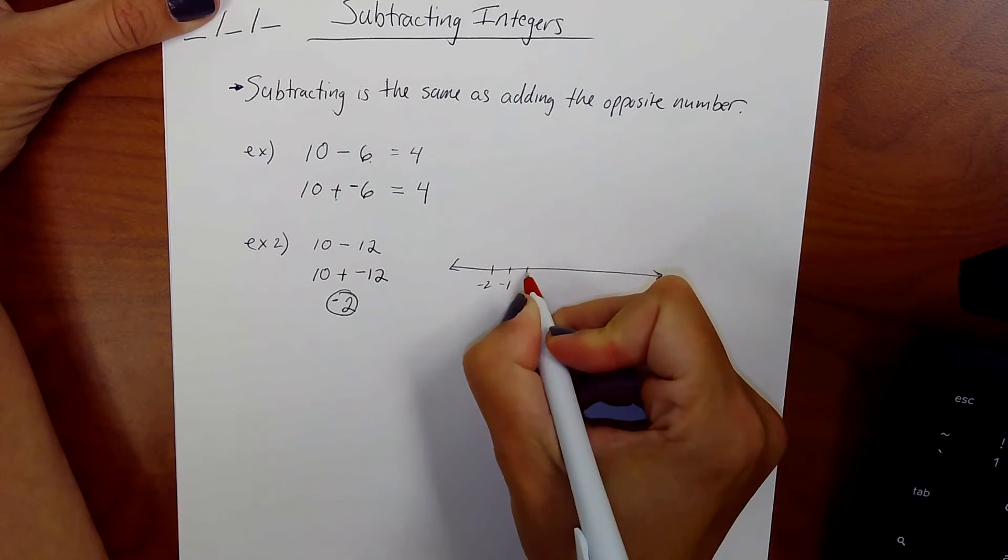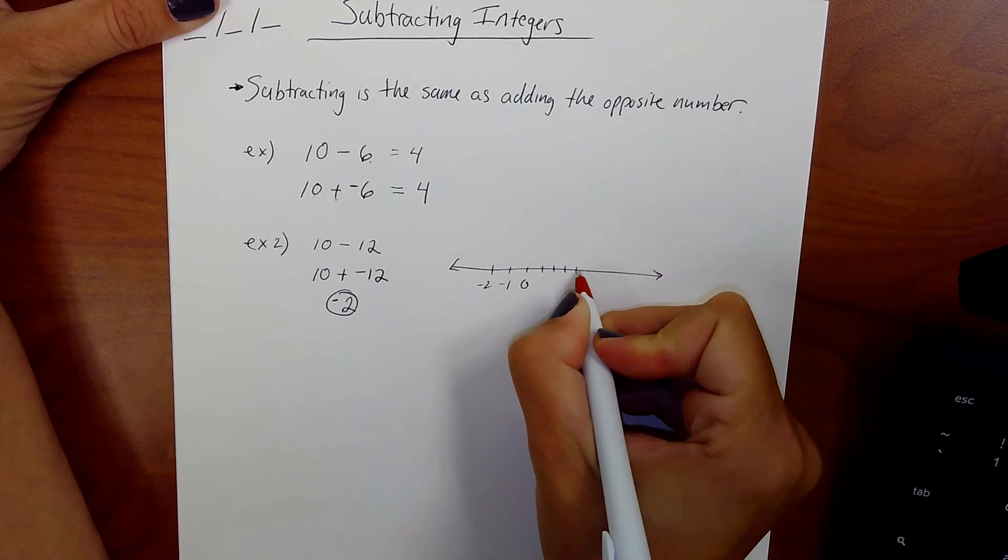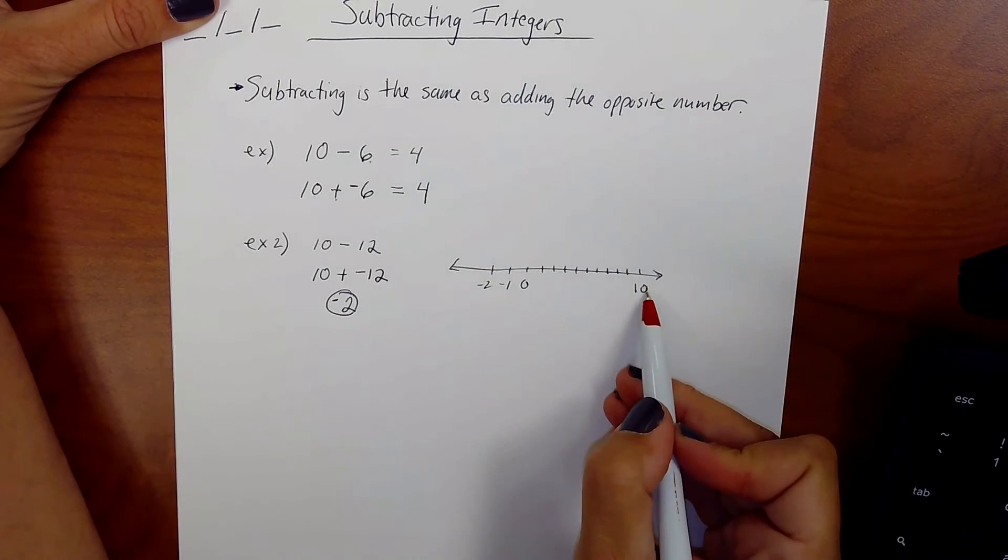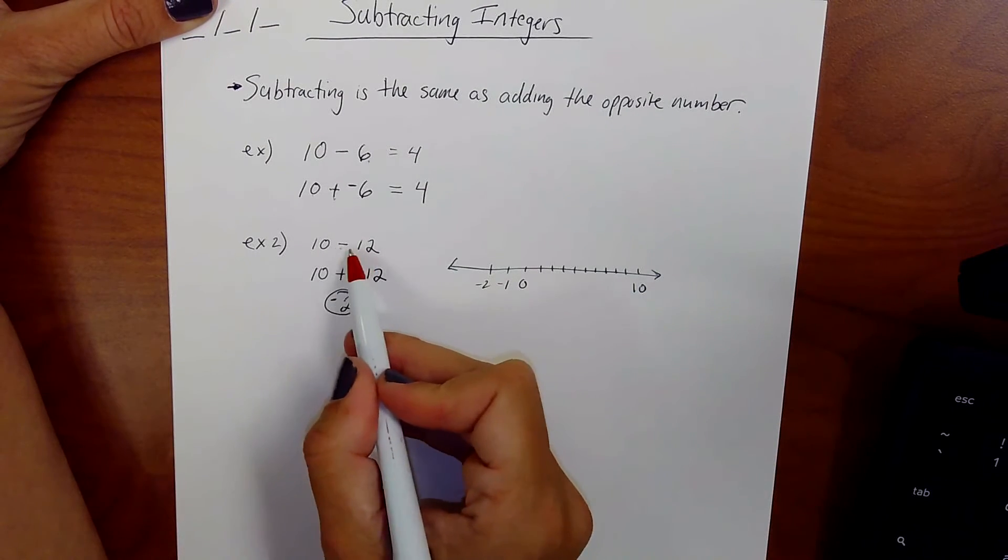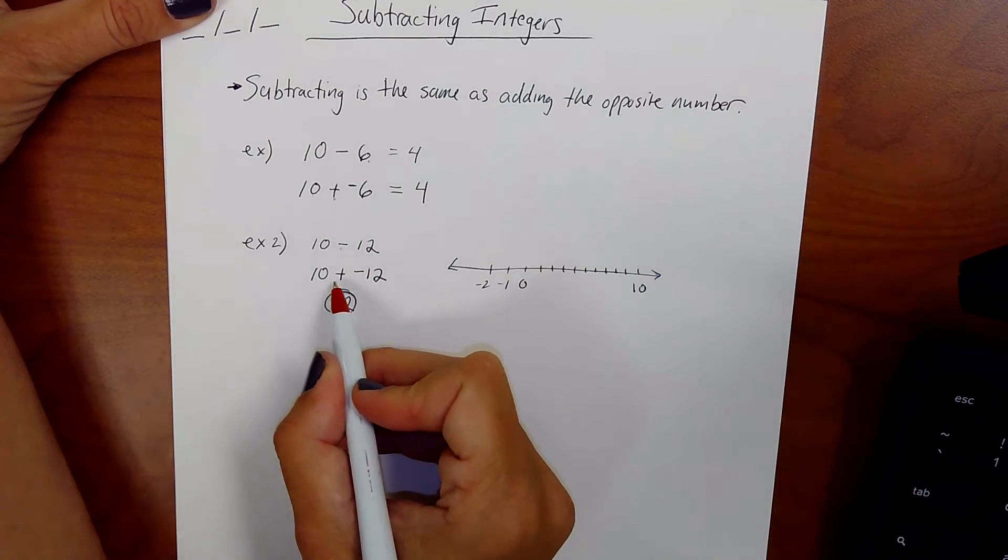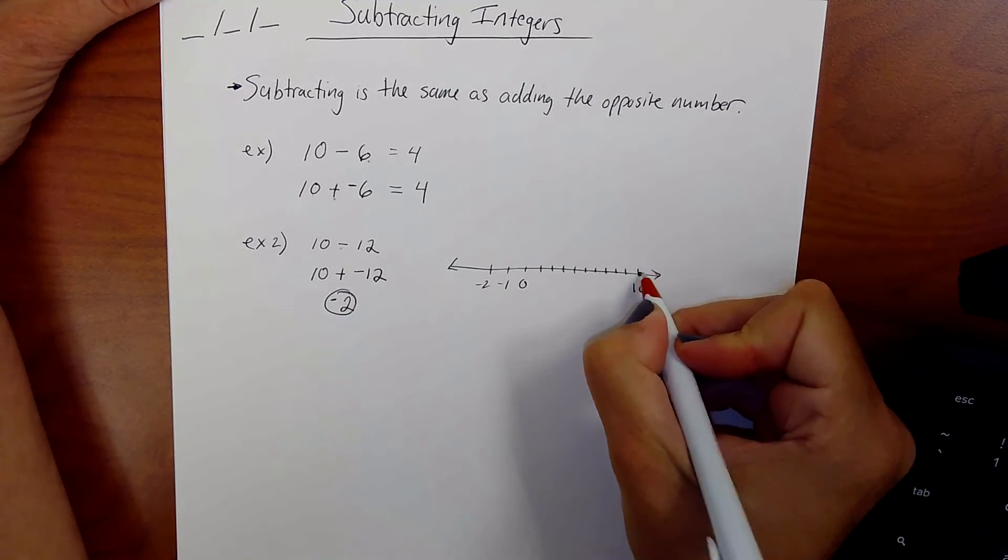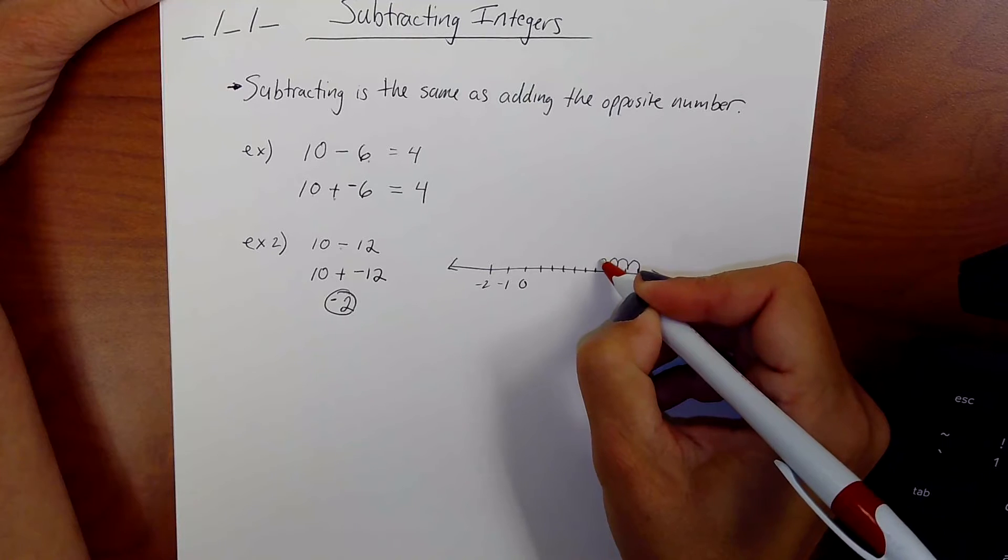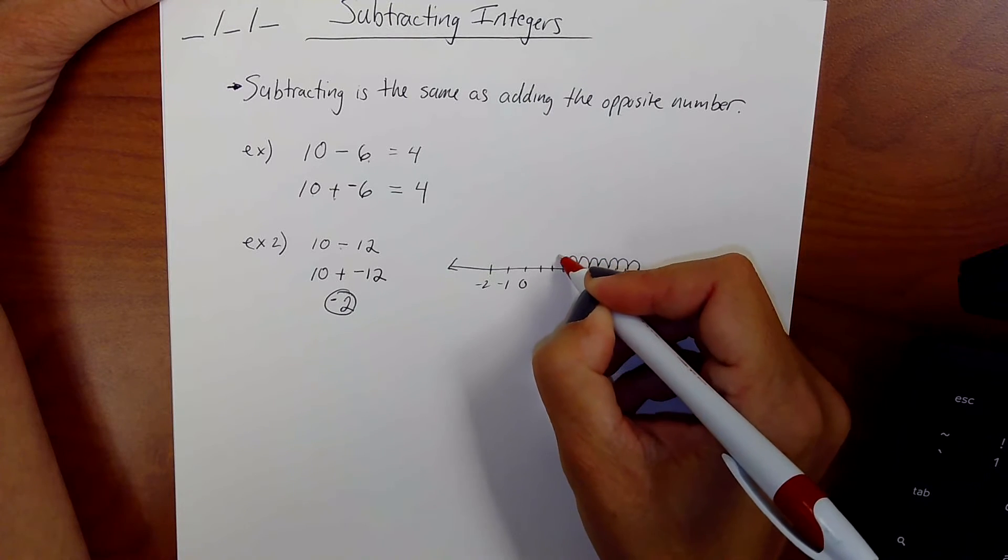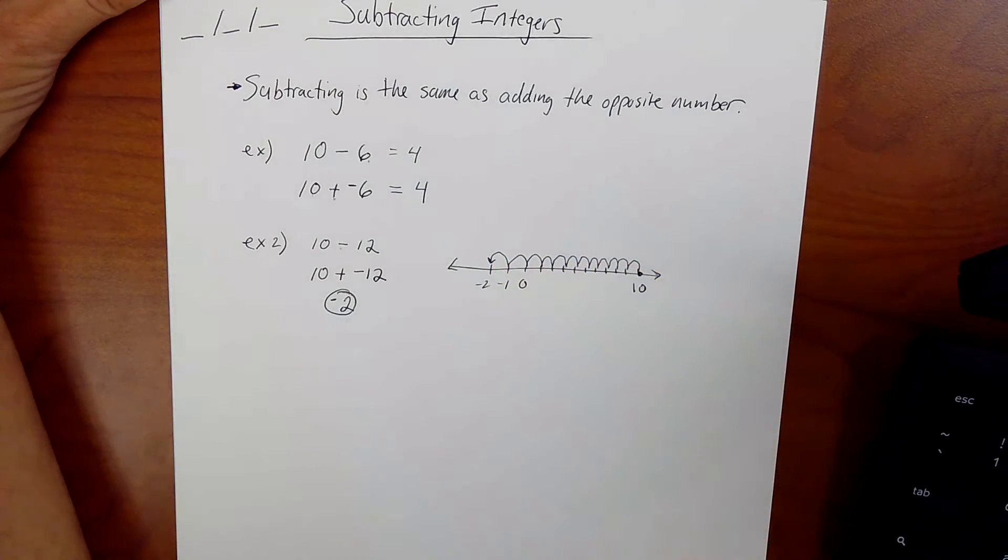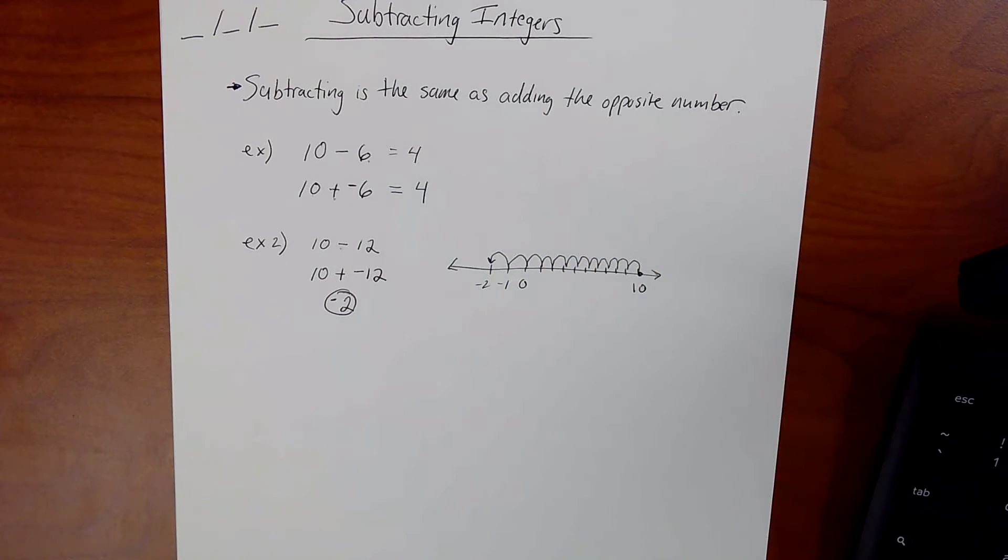Let's see. Negative 2, negative 1, 0, 1, 2, 3, 4, 5, 6, 7, 8, 9, 10. Right? If you were at 10 and you took away 12 or you moved 12 in the negative direction, here I am at 10. Let's move. 1, 2, 3, 4, 5, 6, 7, 8, 9, 10, 11, 12. That's why you get all the way back to negative 2.